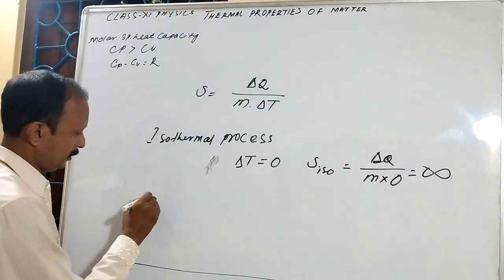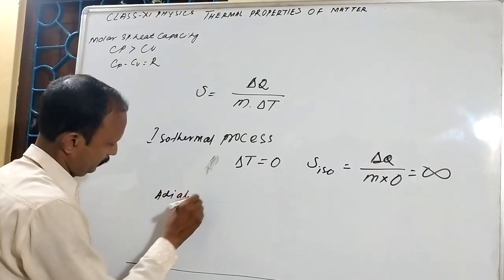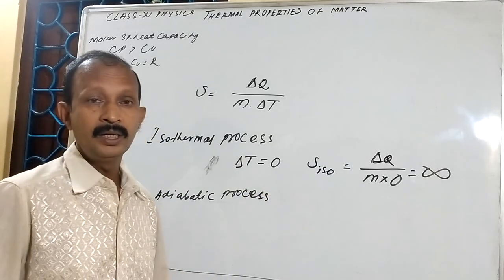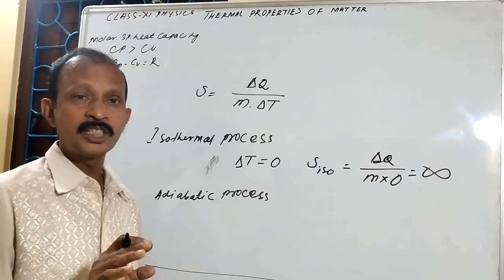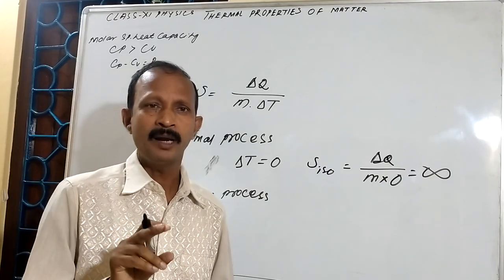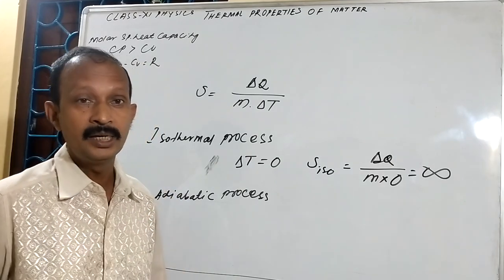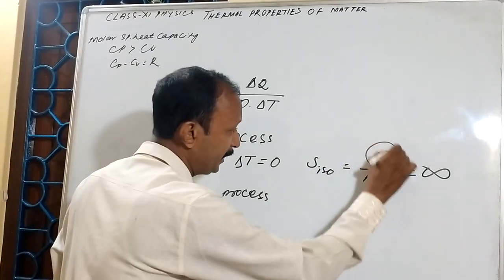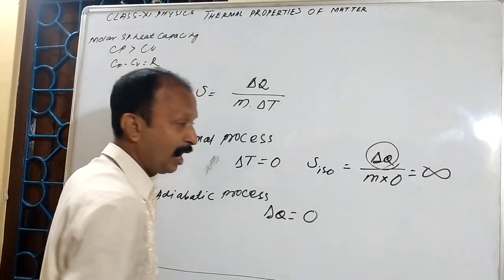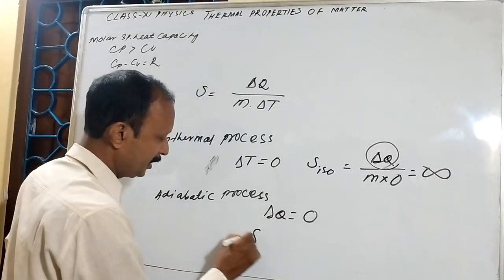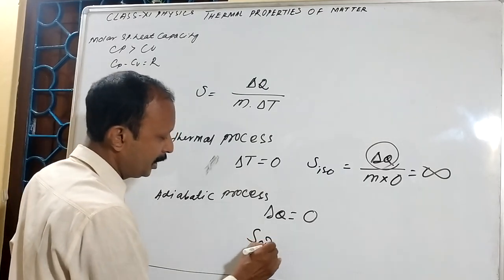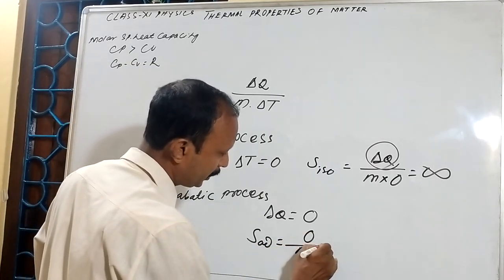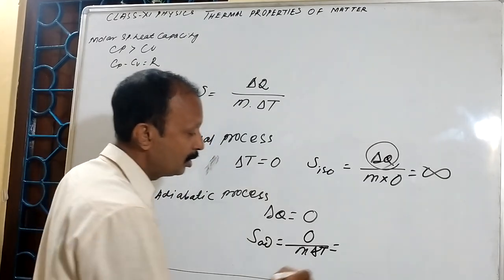If it is in an adiabatic process, in this process there will be no transfer of heat energy. That means the change in heat energy will be equal to zero. So, in that case, specific heat capacity in adiabatic process is equal to zero upon N into delta T. That means it is equal to zero.